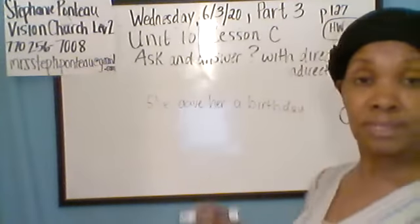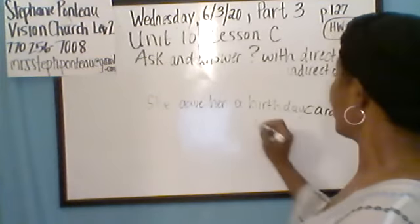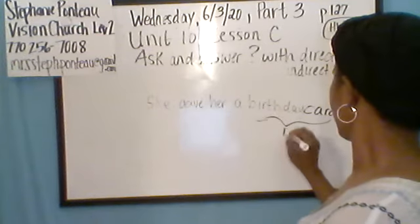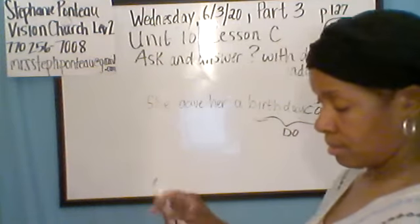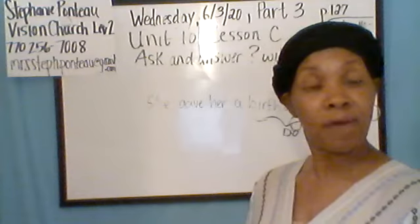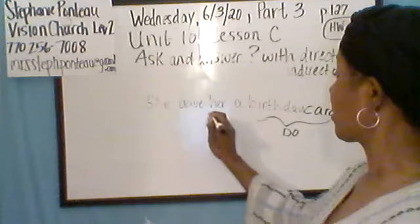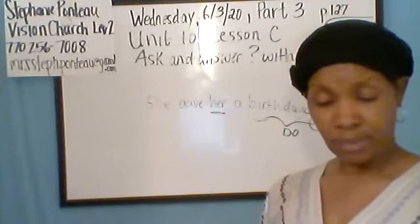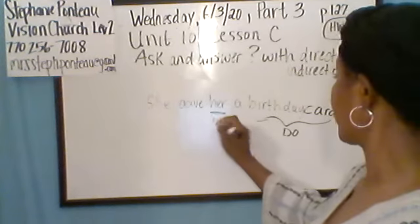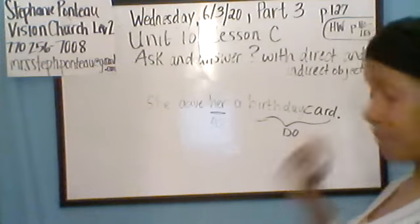There are objects in this sentence. What? Birthday card — that's the direct object. Paula is a female, a woman, so 'she gave her' — 'her' is the pronoun you would use to replace Maria, as the indirect object. So that's how the sentence would go: she gave her a birthday card.